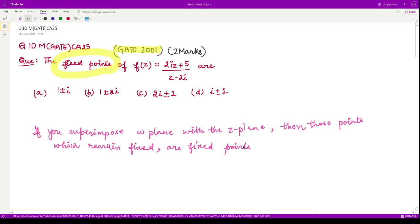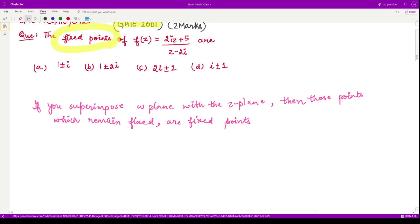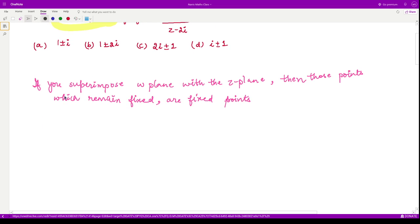So let us understand this visually. Suppose I have this coordinate axis - this is my x-axis, this is my y-axis, and I have some points, say one point is here and one point is here. Now I have applied this transformation f(z) onto this.